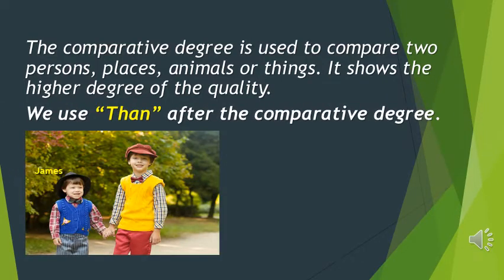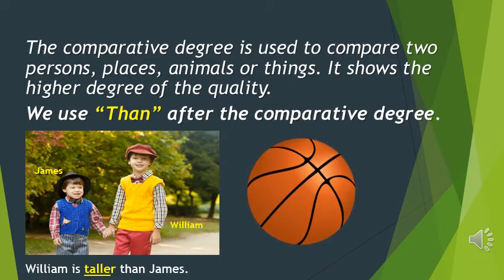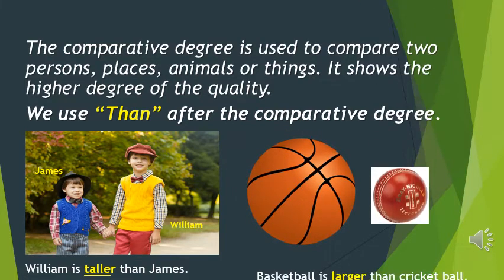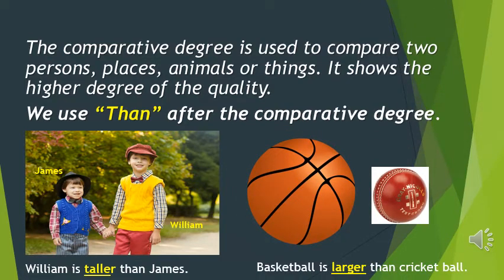For example, James and William — who is taller? William is taller than James. So the height of James and William are being compared. Another example: a basketball and a cricket ball — which is bigger? The basketball is larger than the cricket ball. So the basketball is being compared with the cricket ball.